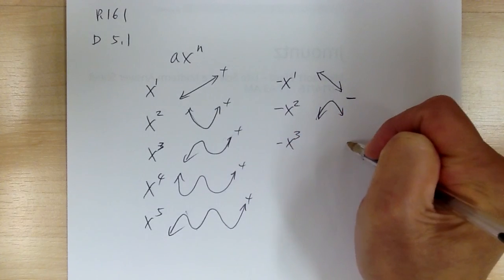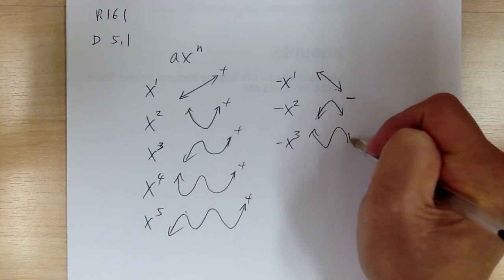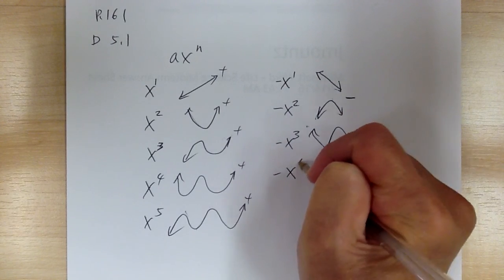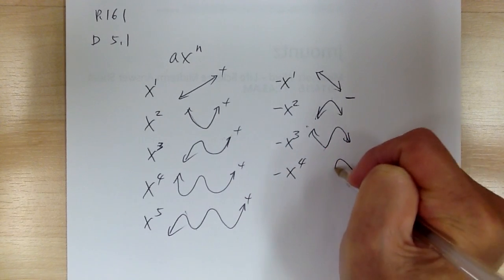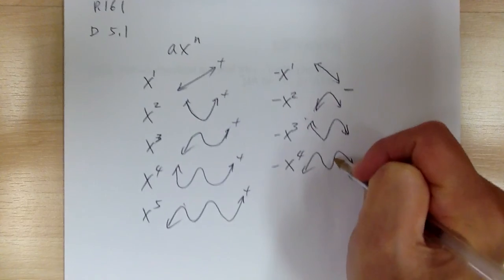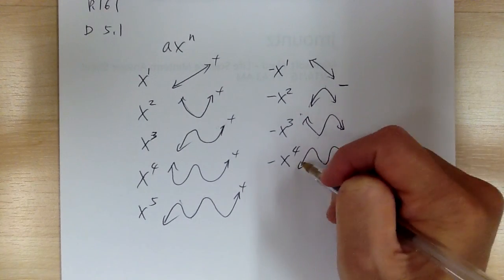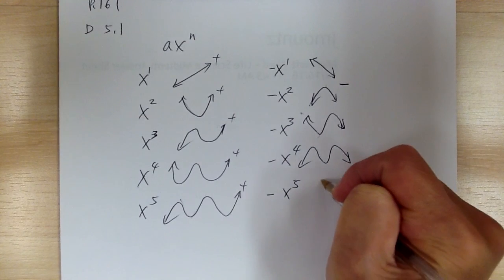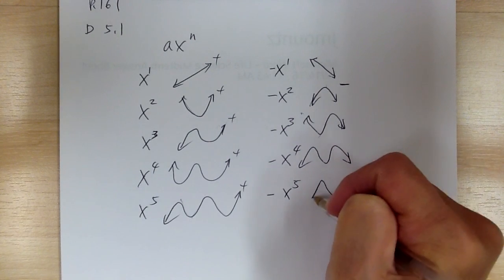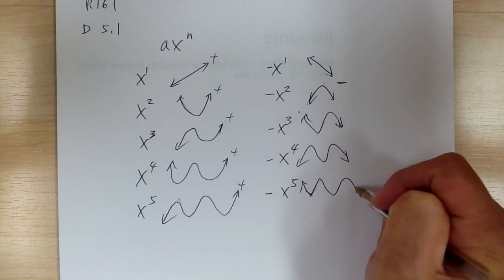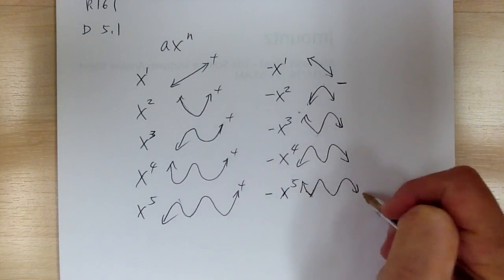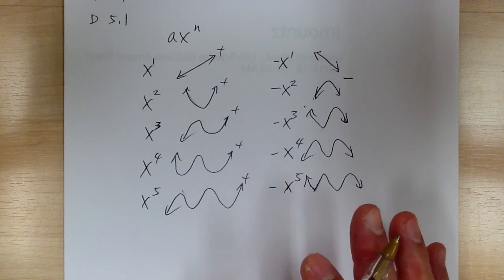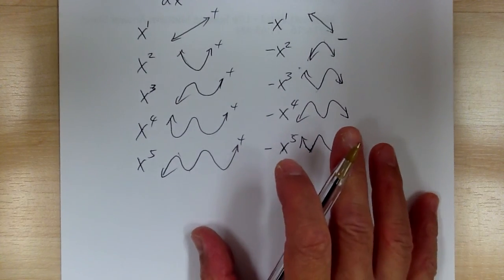If you have negative x to the 3rd power it's going to look like this — 1, 2, 3. Negative x to the 4th power looks like an M — 1, 2, 3, 4. And negative x to the 5th power gives 1, 2, 3, 4, 5 directions. So again, each power gives you one direction. This is the general shape for sketching polynomials.